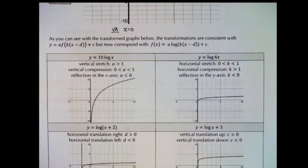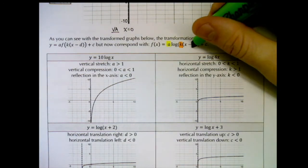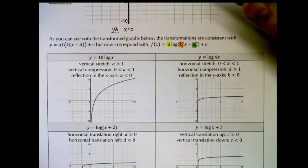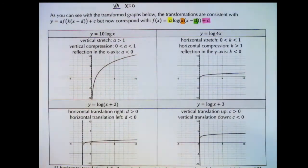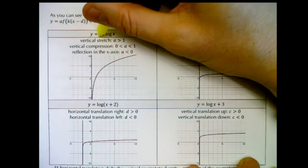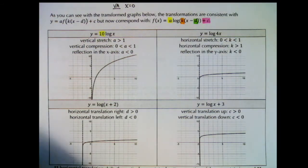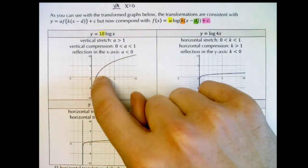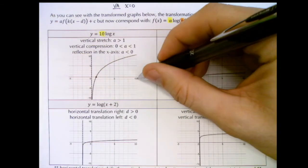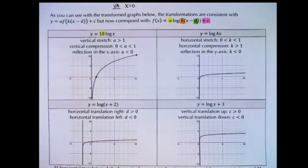'a' goes in front of the log function and multiplies it. In our first example we have 10·log x, so our a value is 10. An a value greater than 1 indicates a vertical stretch. Comparing the original log function to our new stretched version, we see a curve that goes much more vertical. It maintains the same x-intercept, but the point that was at (10, 1) is now 10 times higher at (10, 10). That's our vertical stretch.